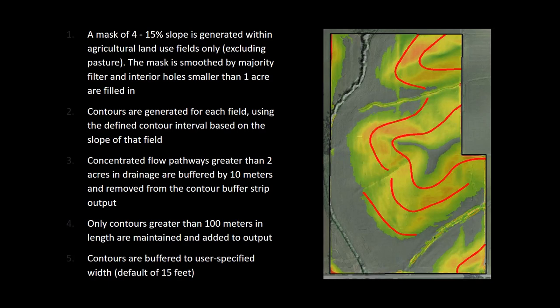The ACPF tool begins to place contour buffer strips by first masking out 4 to 15 percent slopes by fields within agricultural land — this does not include pasture. The mask is smoothed by a majority filter so that holes within the mask are filled.